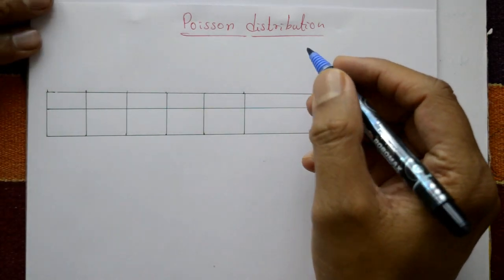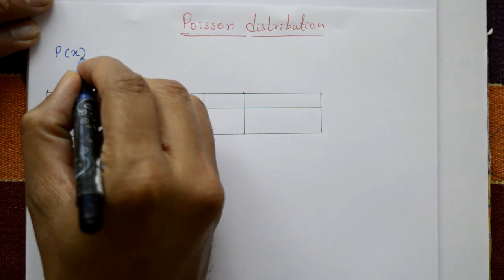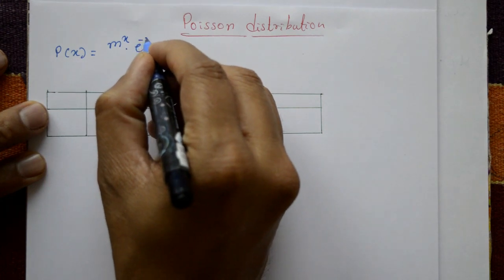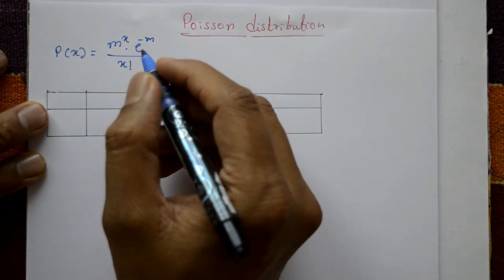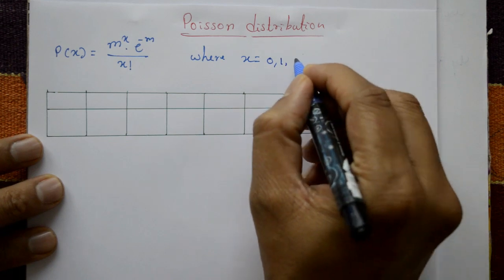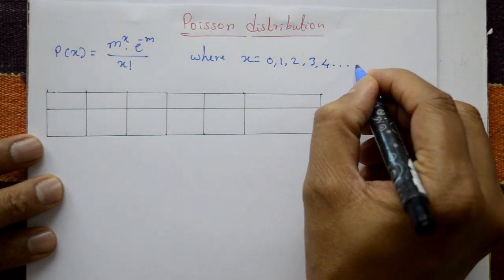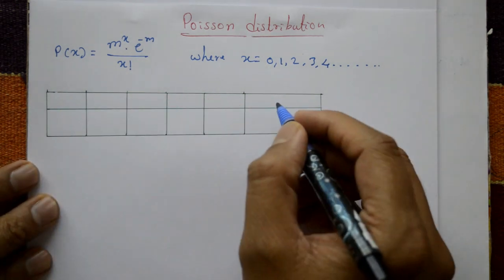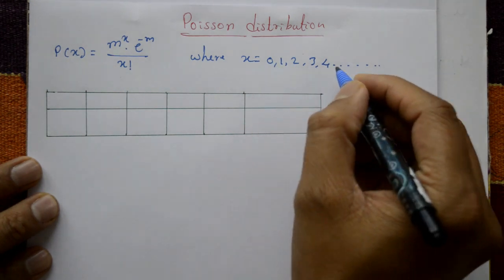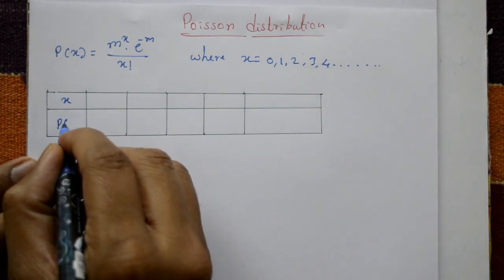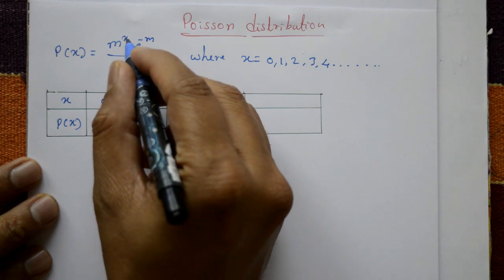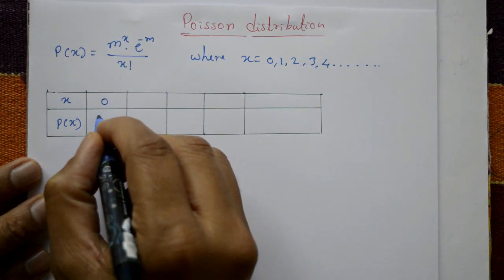The Poisson distribution is defined as P(x) = m^x * e^(-m) / x!, where x takes values 0, 1, 2, 3, 4, and so on. This is a distribution of probabilities. For x = 0: 0! = 1, m^0 = 1, so P(0) = e^(-m).